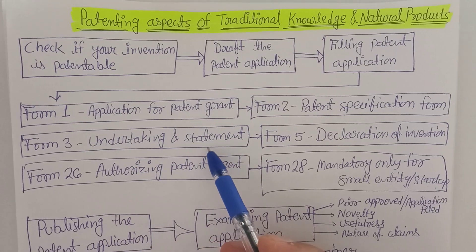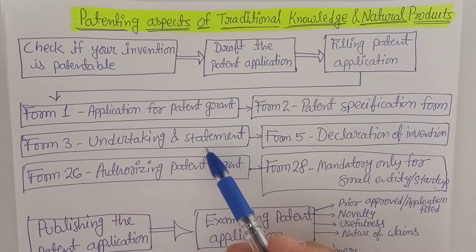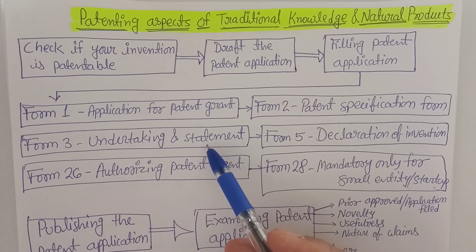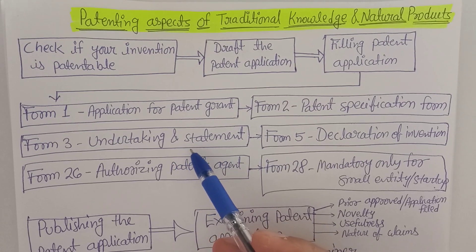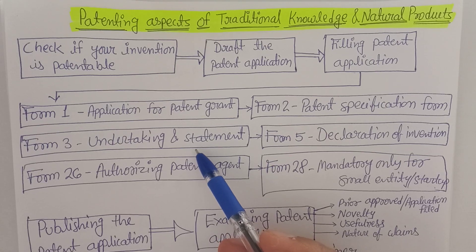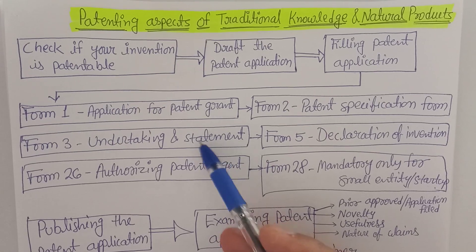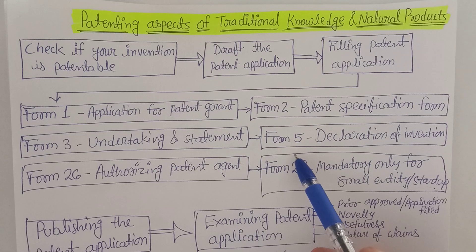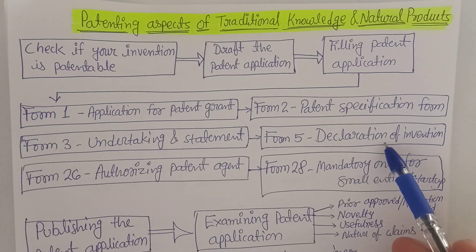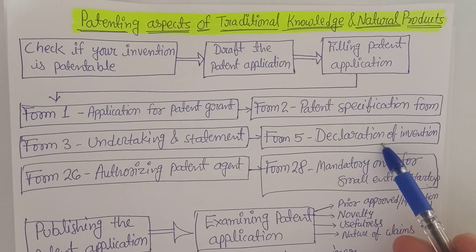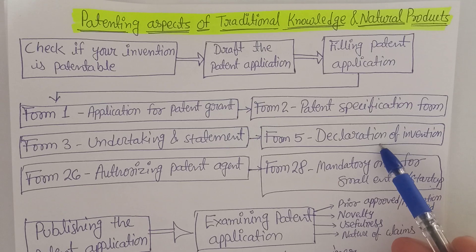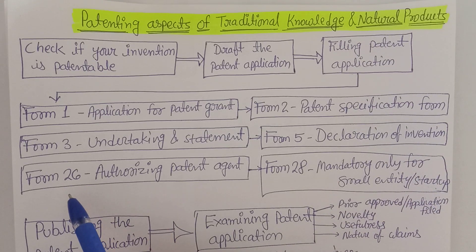Form number 3 is an undertaking statement from the patent holder, declaring they are wholly responsible for the particular information for which they are filing the patent. Form number 5 is the declaration of invention, where the inventor declares that it has not been invented by somebody else worldwide and that they alone are responsible for this particular invention.